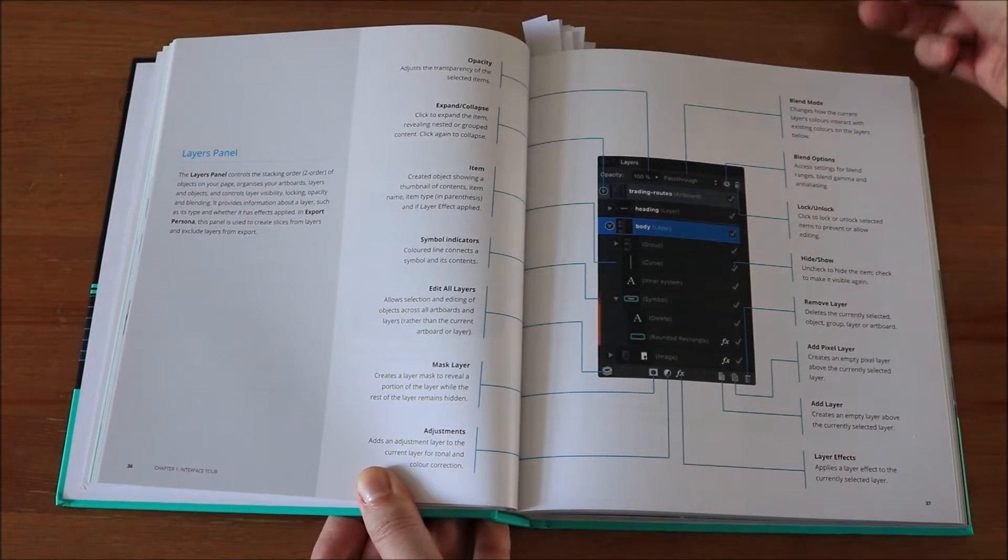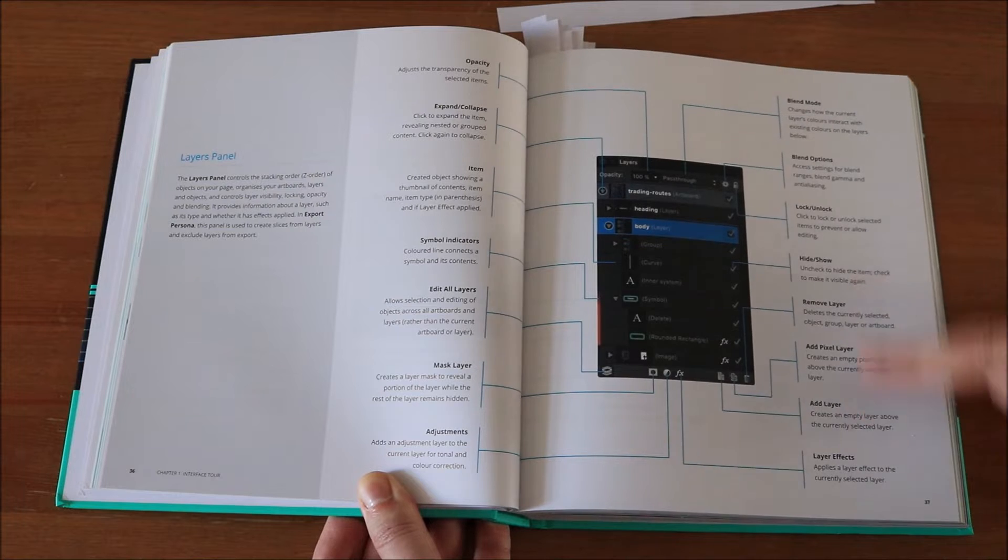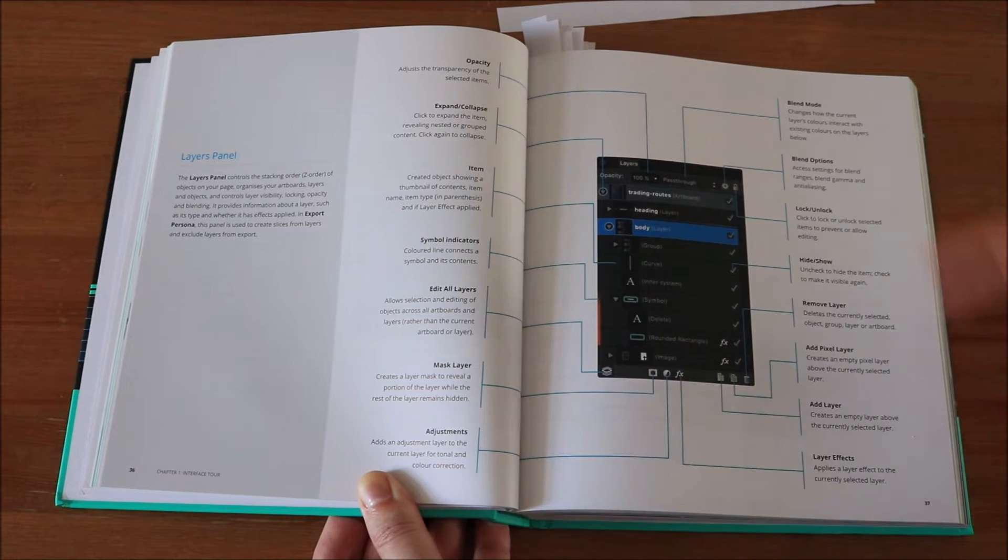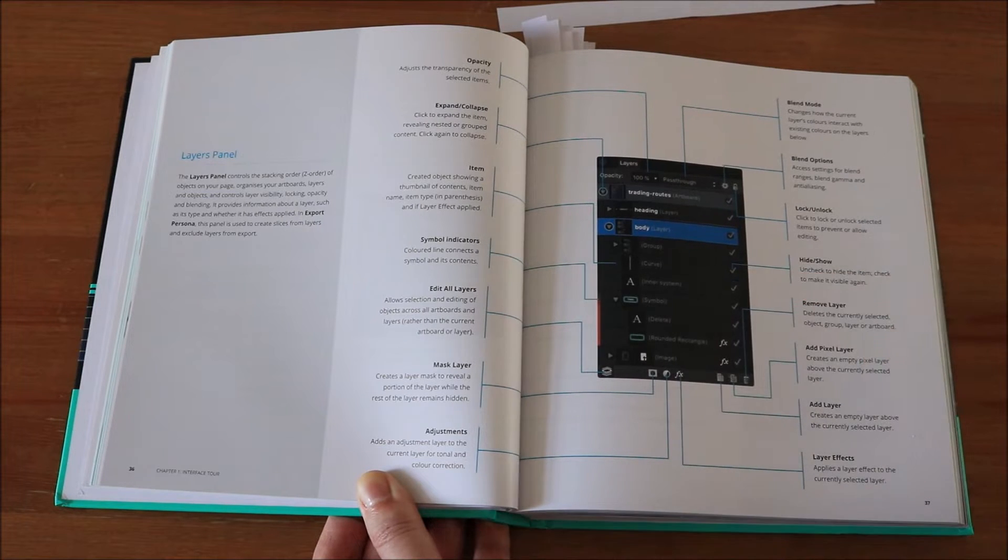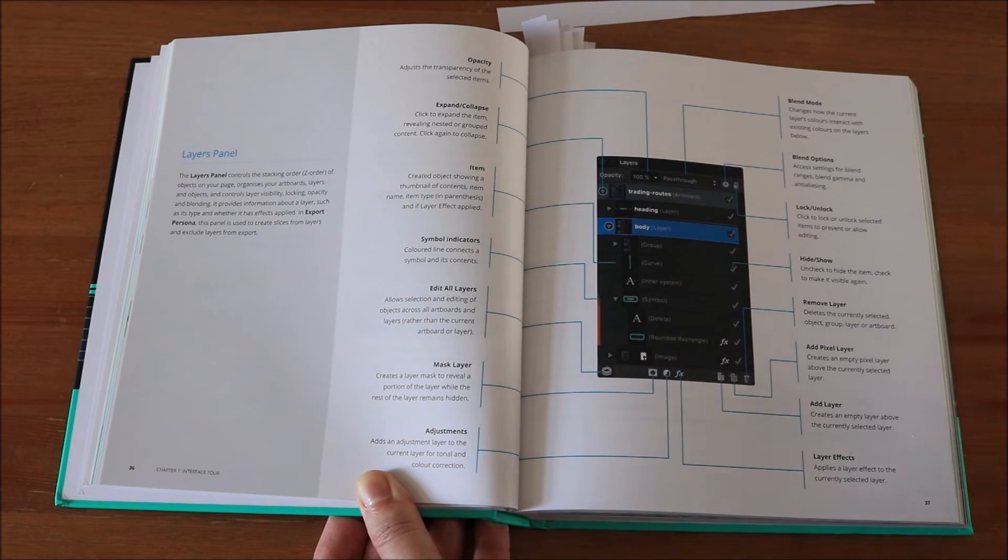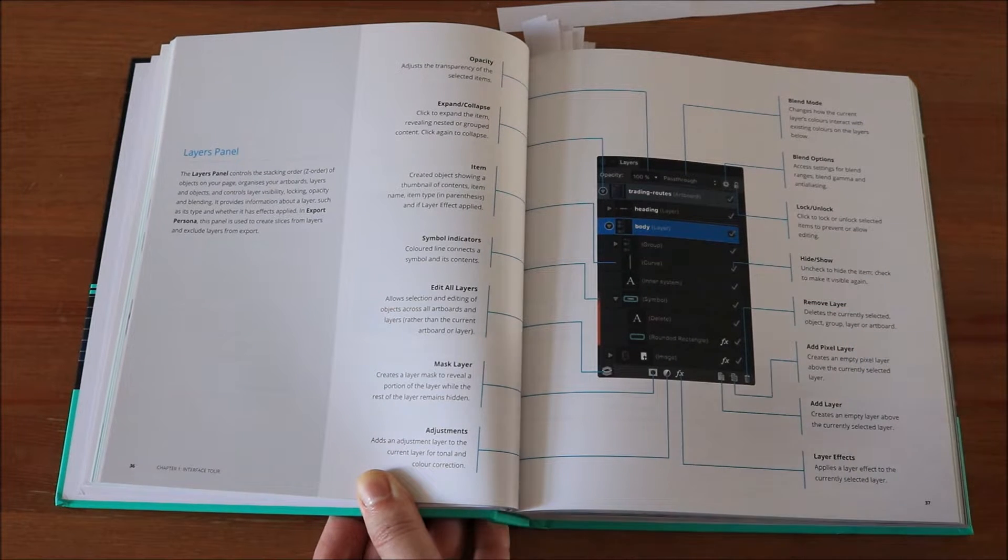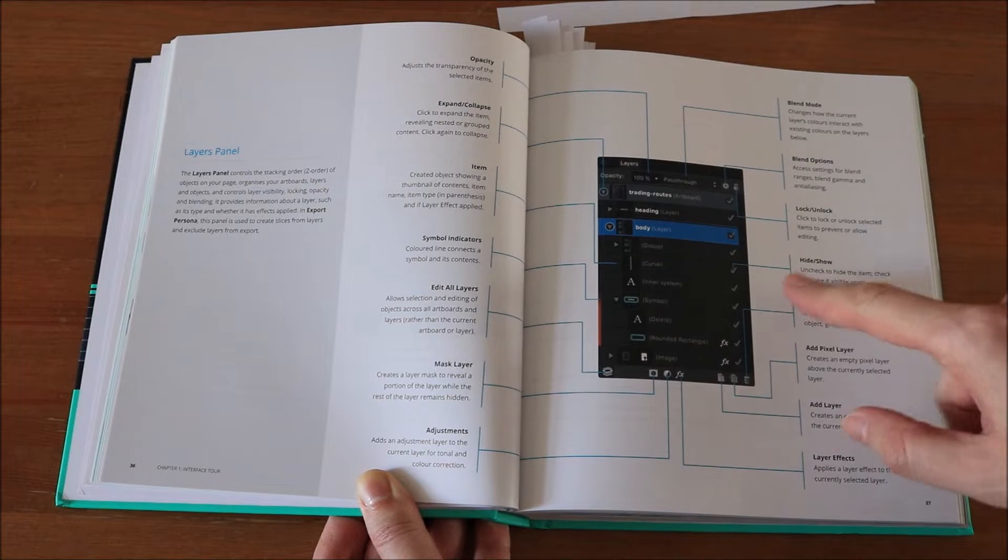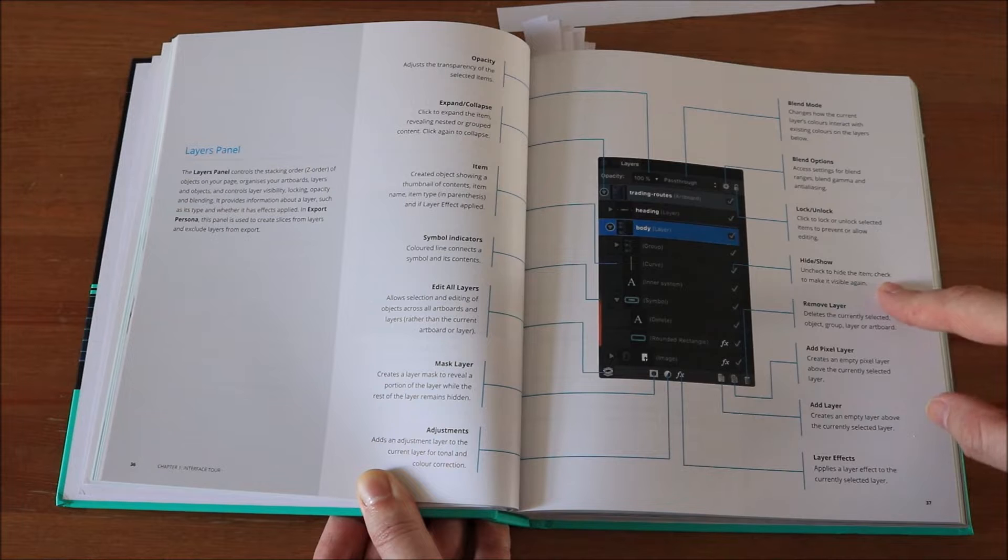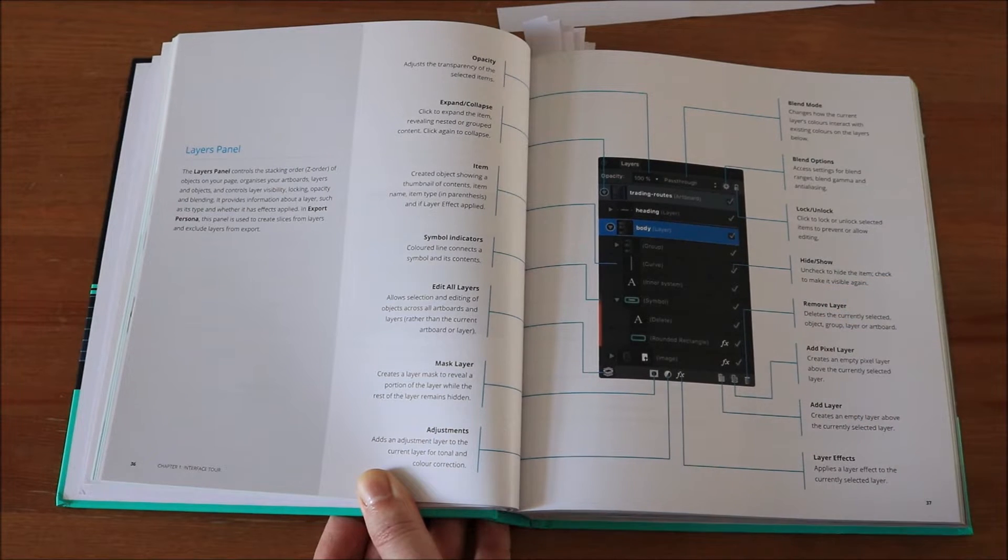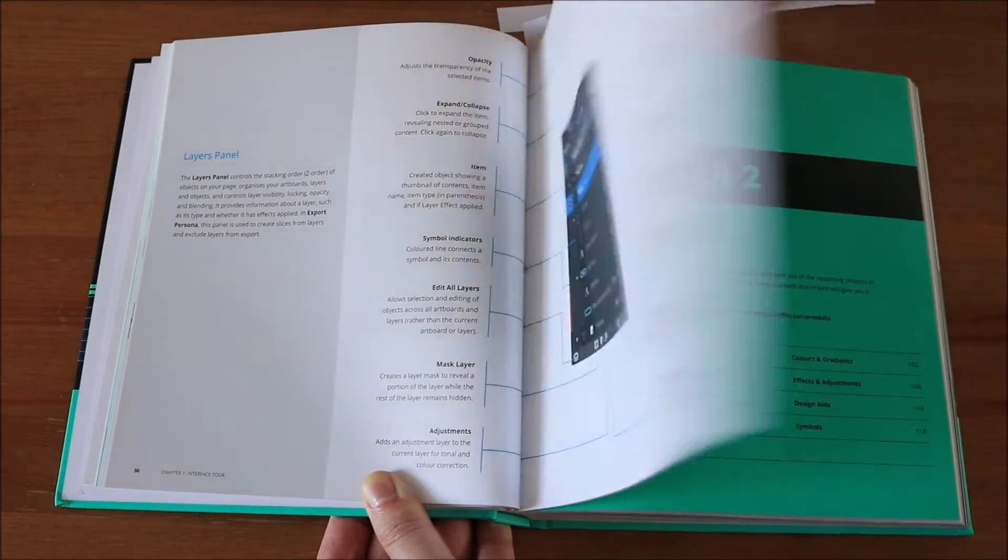Let's go on to the next part here. You can see also the panels are very nicely explained in what they do every step with a blue line. So you can exactly see to which part of the picture of this kind of area that the explanation belongs to. So again, very short and precise description, hide and show, uncheck to hide the item, check to make it visible again. Super precise, super nice explanation.